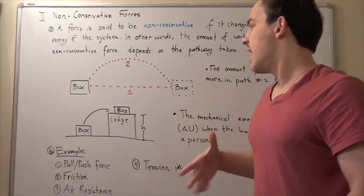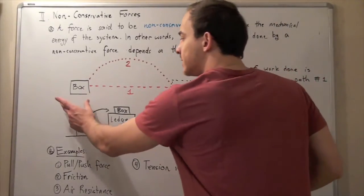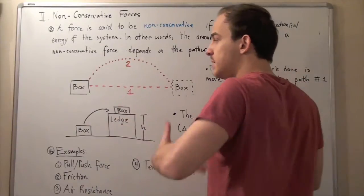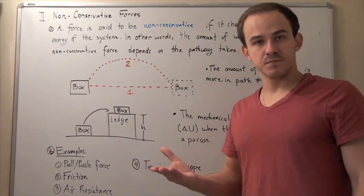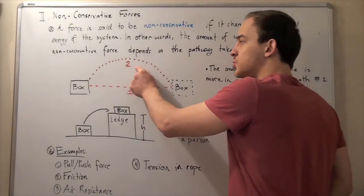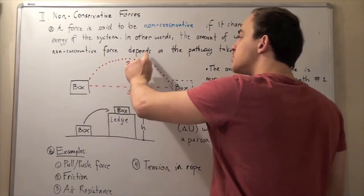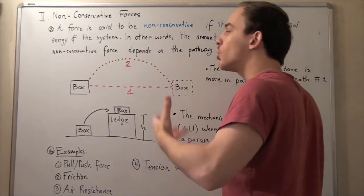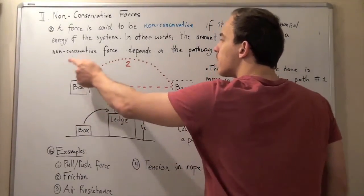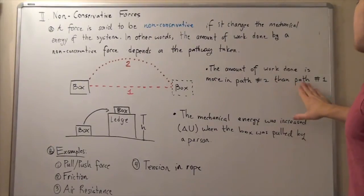For example, suppose our system is a box and a person is either pushing or pulling it from position A to position B along two paths — path 1 and path 2 — on a surface where friction exists. The displacement in both cases is the same, but the distance traveled is not. Path 2 requires a longer distance than path 1, which means more work must be done pushing or pulling the box from A to B along path 2 than path 1.